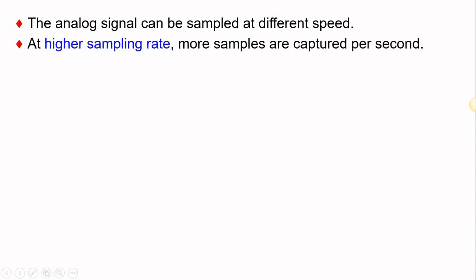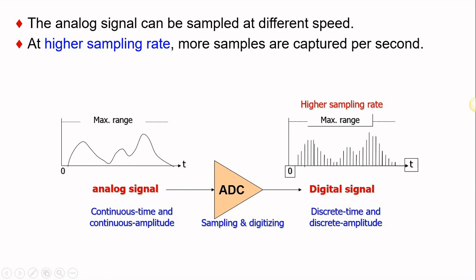The analog signal can be sampled at different speeds. At a higher sampling rate, more samples are captured per second. For example, by using a higher sampling rate or higher frequency, you will have more data sampled from the analog signal, and the output digital signal will follow almost the exact same shape as the original analog signal, because you have many pulses within one frequency period.